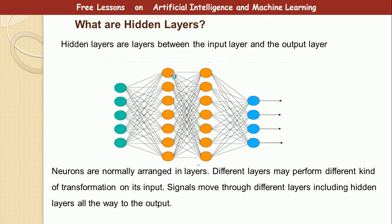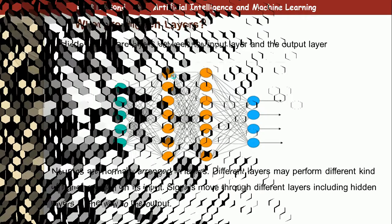Signals move through different layers including the hidden layers all the way to the output. But one question I will ask you is, is it possible that signals can move backwards from the output to the input? Well, we will talk about this a little later when we discuss backpropagation.